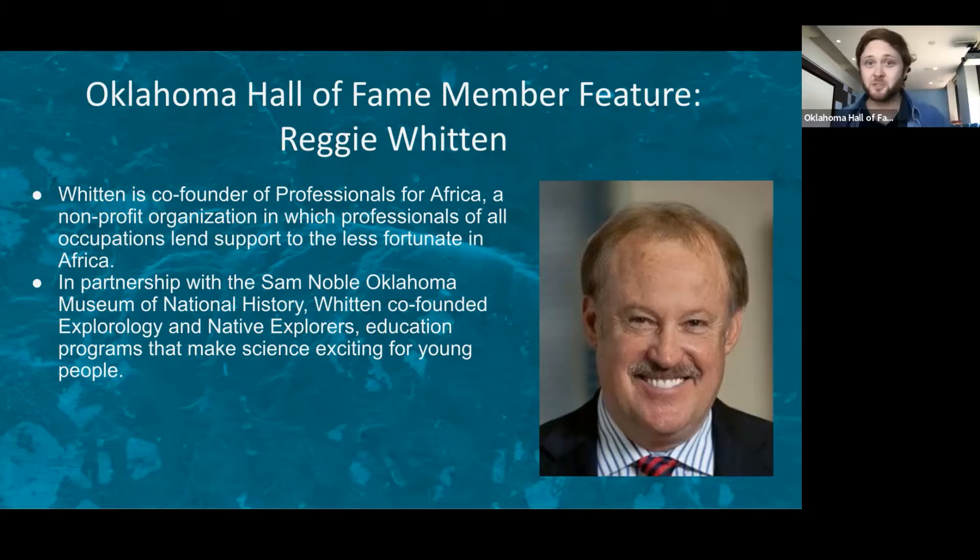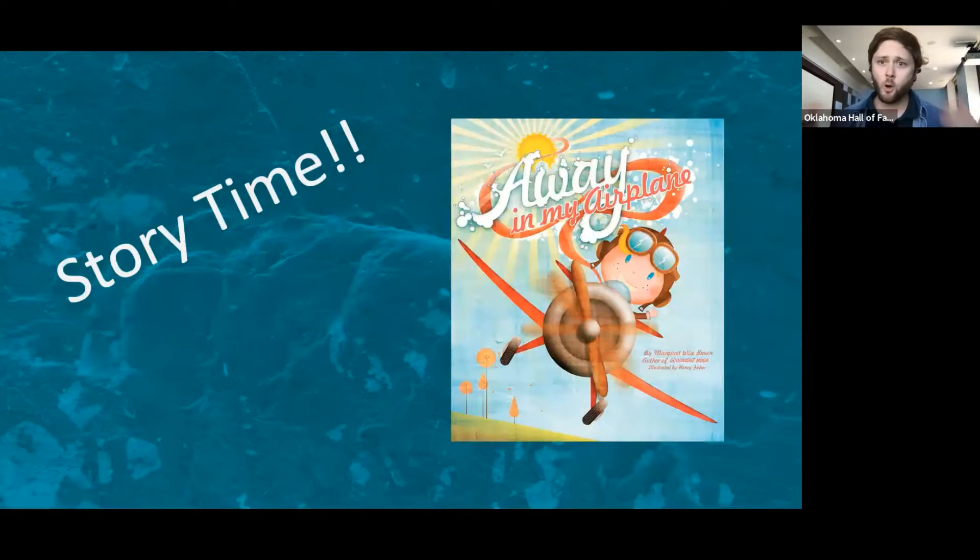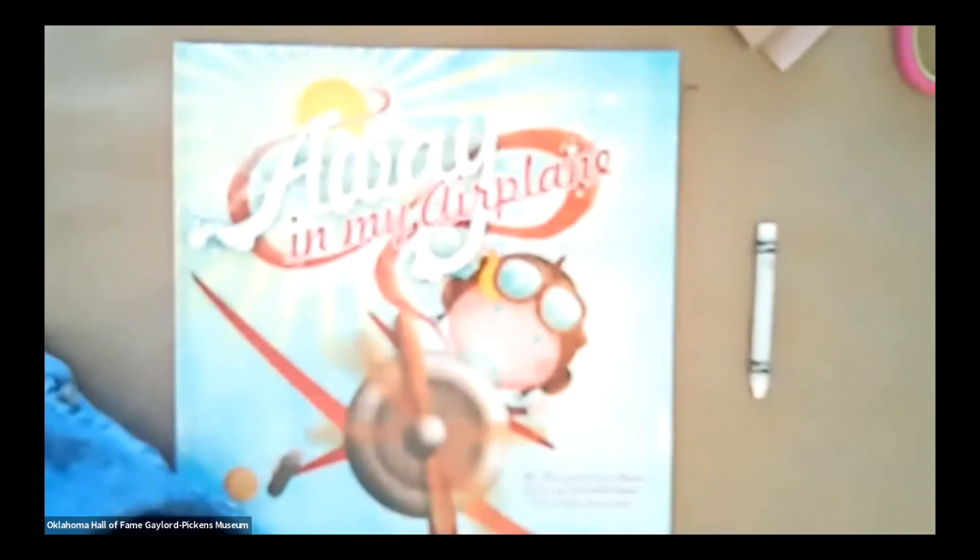Reggie Witten is co-founder of Professionals for Africa, a nonprofit organization in which professionals of all occupations lend support to the less fortunate in Africa. And in partnership with the Sam Noble Oklahoma Museum of Natural History, Witten co-founded Explorology and Native Explorers, education programs that make science exciting for young people. So he has adventure at his heart and he loves to explore. And so we are inspired by Mr. Witten today, and we are going to be reading Away in My Airplane.